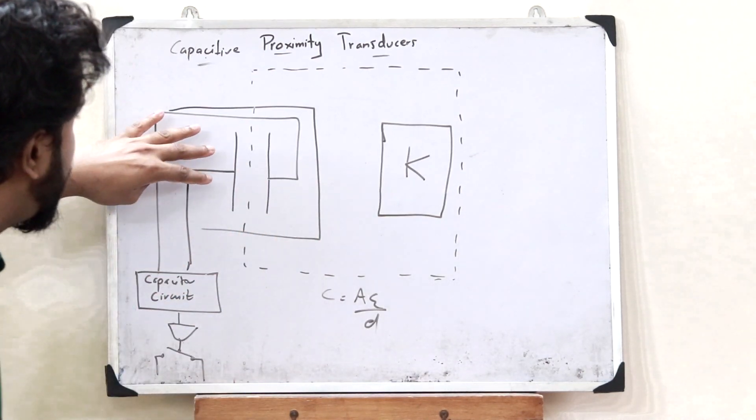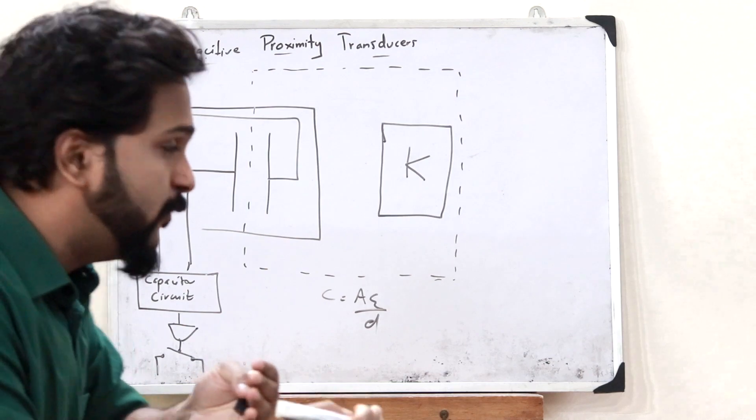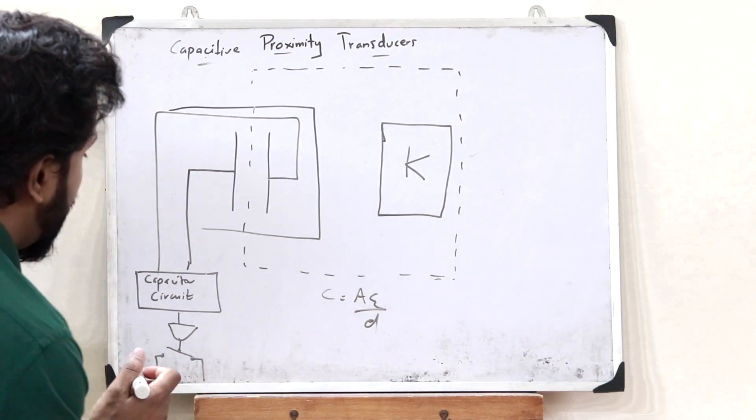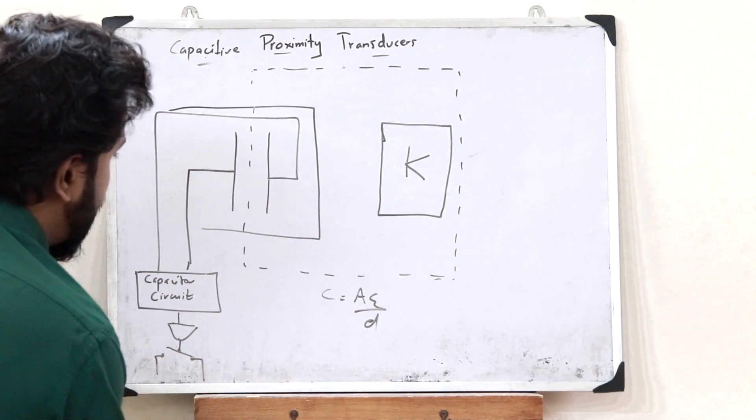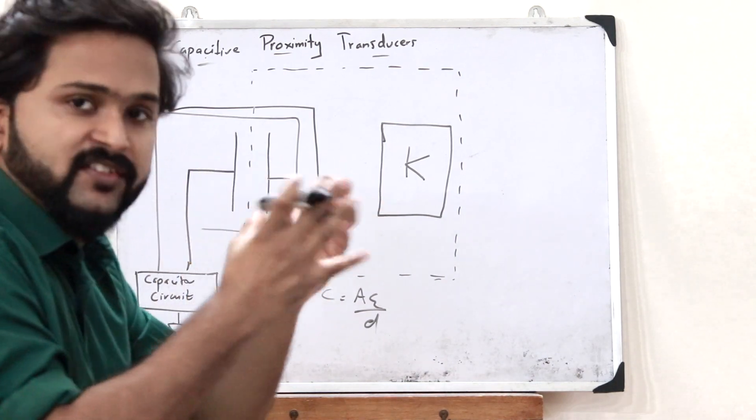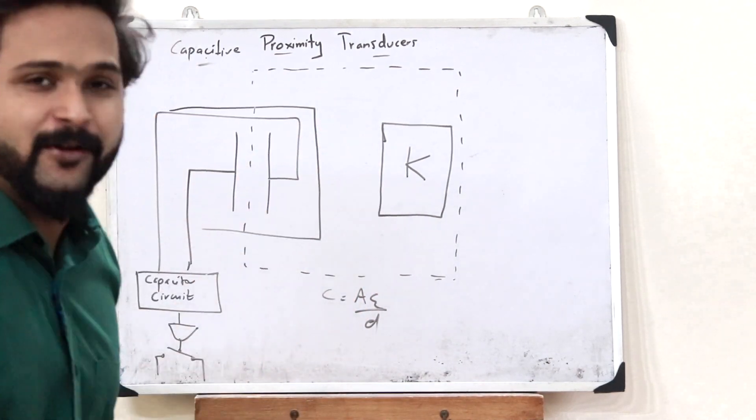When this oscillating frequency exceeds a particular value, this capacitor circuit will turn on this particular switch and therefore it results in the sensing of this particular object here.